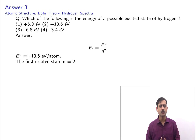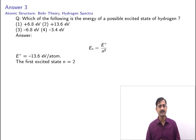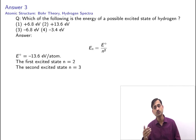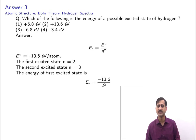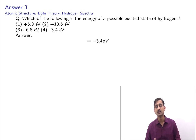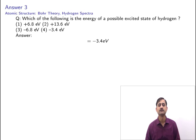The first excited state is n = 2, the second excited state is n = 3, and so on. The energy of the first excited state is E₂ = −13.6 / 2² = −13.6 / 4 = −3.4 eV. This matches one of the options, so the answer is −3.4 electron volts.